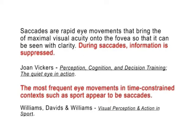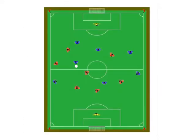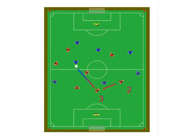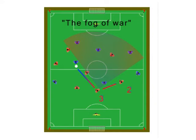Now we'll consider what happens during the switch between fixations. This is called a saccade, and the data between the fixation points is not available to perception. Here, the red number three has to watch the blue player with the ball and red number two, who's overmatched by his immediate opponent. Three must divide his attention between these two workspaces. While scanning between the ball and number two, three is not directly accessing the data flow. That would require fixating on a new target. Instead, this area is just a fog.